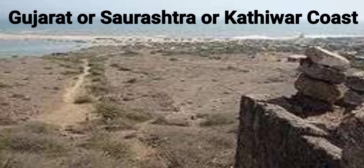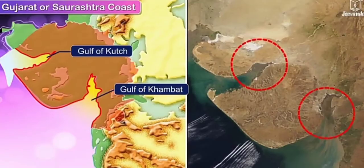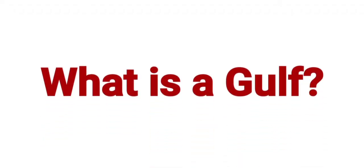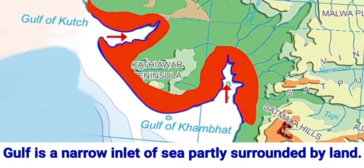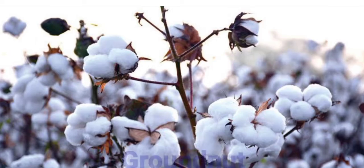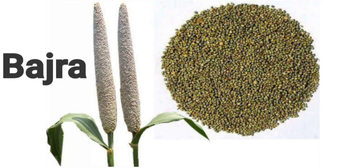Let us talk about these coastal divisions of the western coastal plains. The Gujarat or Saurashtra coast is the top part of the western coastal plains. This coast starts from the Gulf of Kutch and stretches across till the Gulf of Khambat. A gulf is a narrow inlet of sea partly surrounded by land. This region has very fertile soil and thus crops like cotton, groundnut, tobacco, wheat, jwar, and bajra are grown here.